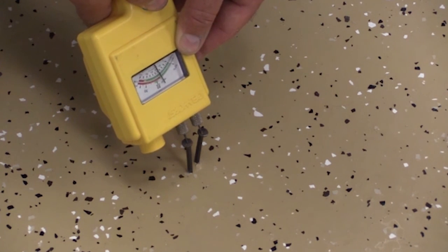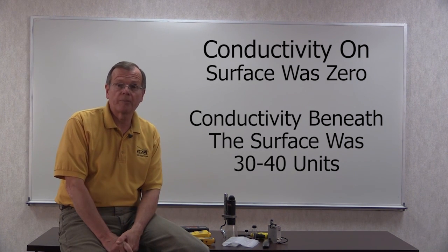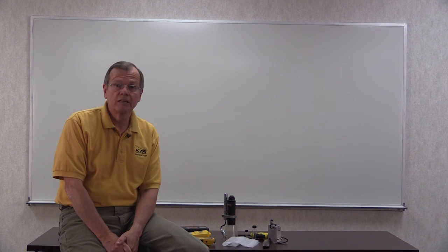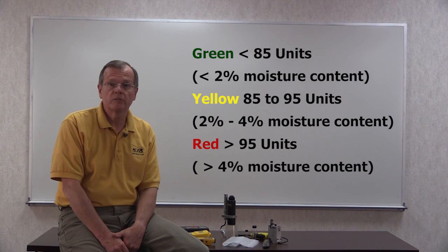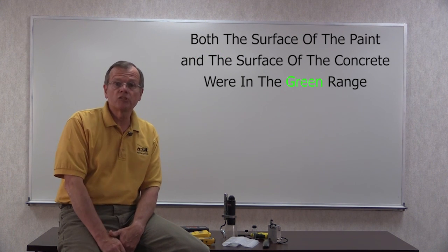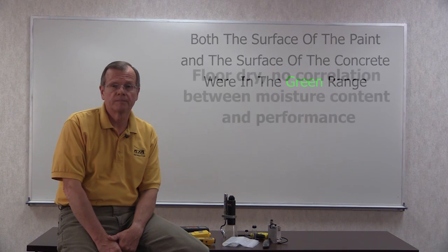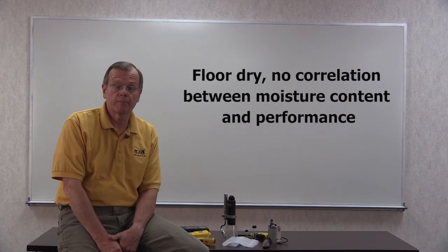We're getting a slightly different moisture reading when testing beneath the surface. The results on the surface of the paint were zero, while the surface of the concrete beneath the paint was 30 to 40 units. The scale can be interpreted as follows: green — less than 85 units — is less than 2 percent moisture content; yellow — 85 to 95 units — is 2 to 4 percent moisture content; and red — greater than 95 units — is more than 4 percent moisture content. In this case, the surface of the paint and the surface of the concrete were both in the green range. All of the instruments showed the floor to be dry — no correlation between moisture content and paint performance.